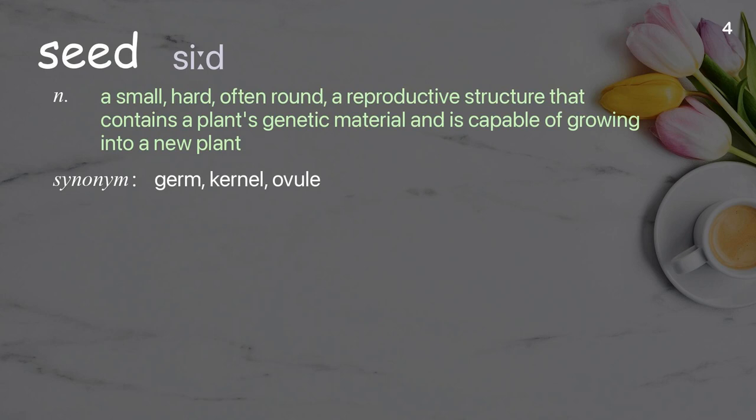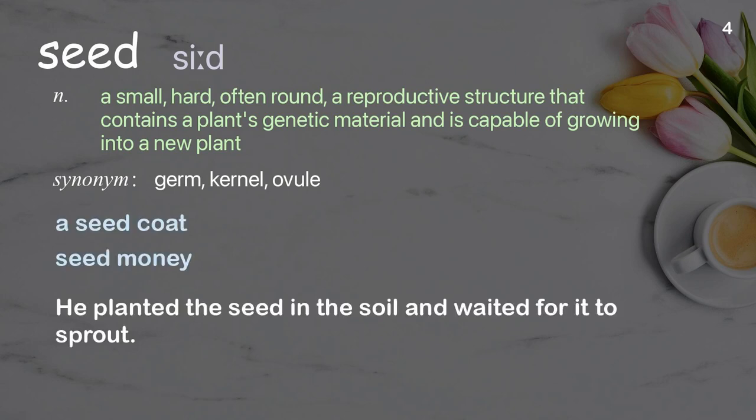Seed: a small, hard, often round reproductive structure that contains a plant's genetic material and is capable of growing into a new plant. Examples: a seed coat, seed money. He planted the seed in the soil and waited for it to sprout.